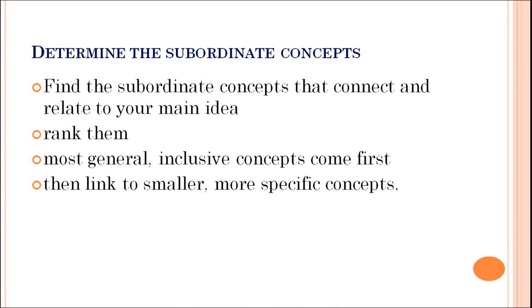Determine the subordinate concepts. Find the subordinate concepts that connect and relate to your main idea, because the first most important thing is your main idea, and after that are subordinate concepts that are consequences of that main idea. Once you have written down all the subordinate concepts, rank them — most general inclusive concepts should come first. Then link to smaller, more specific concepts. Give examples so that the information becomes crystal clear to the learners.